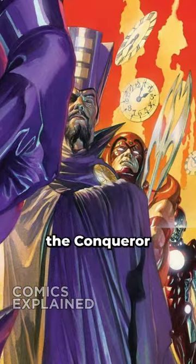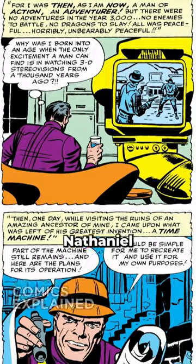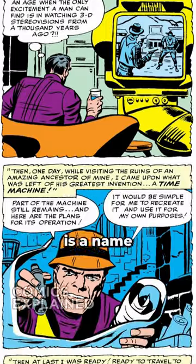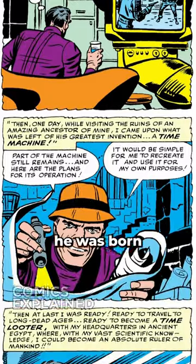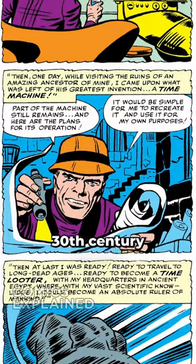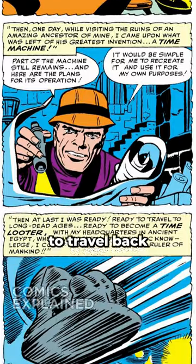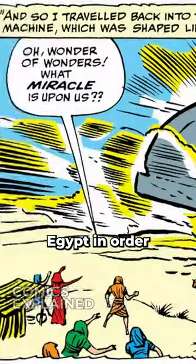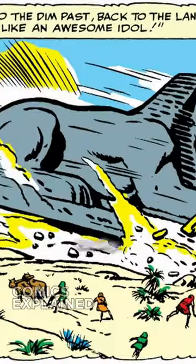Here's every version of Kang the Conqueror explained. Nathaniel Richards is the name he has when he was born in the 30th century and decided to travel back to ancient Egypt in order to conquer all of reality.